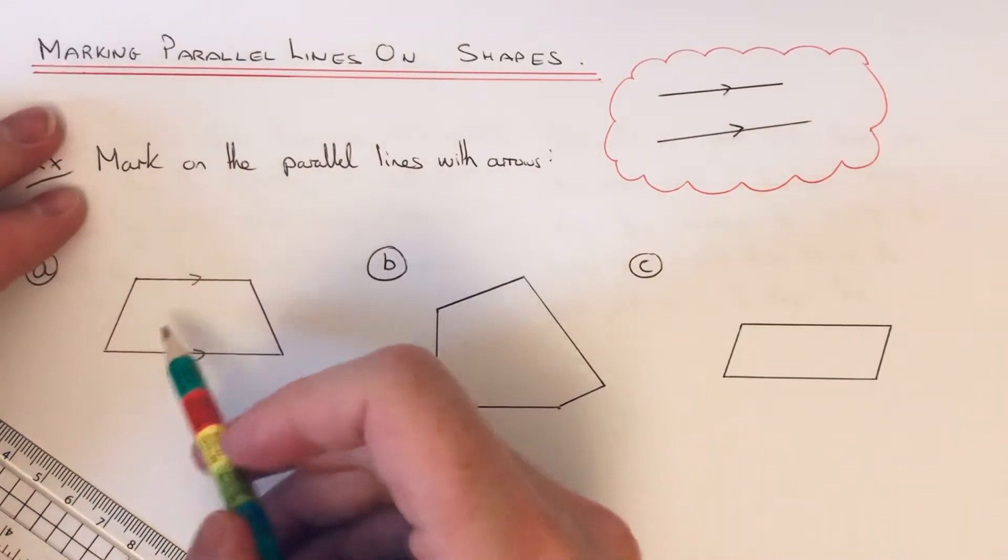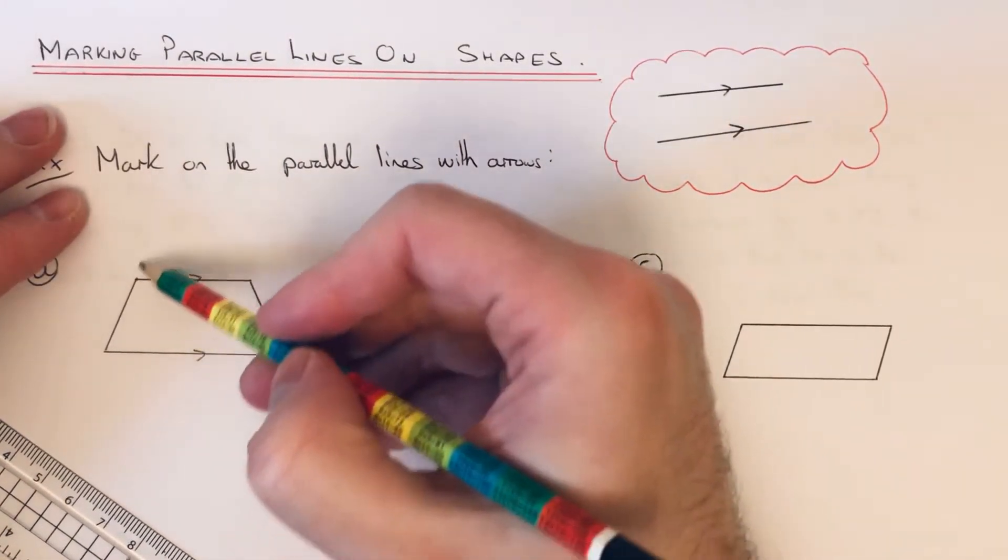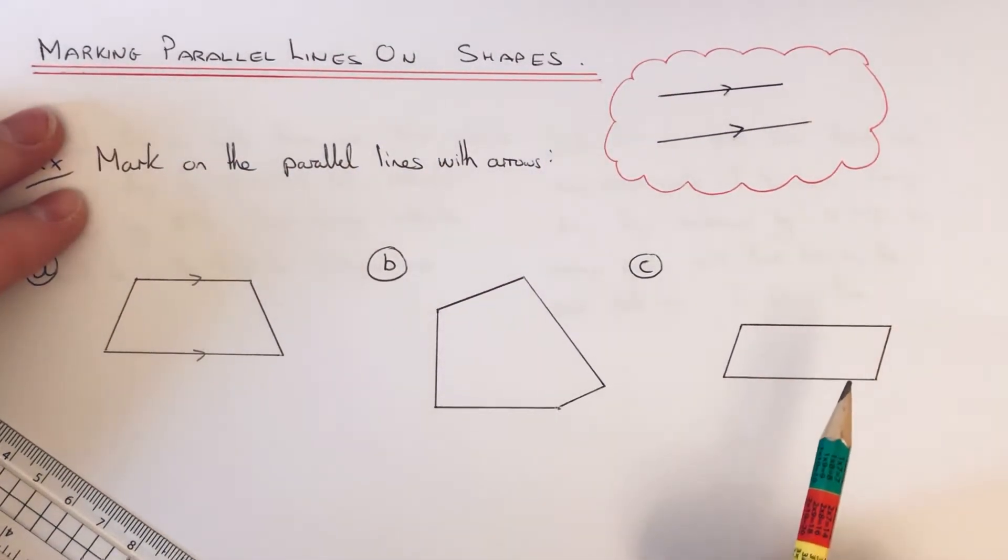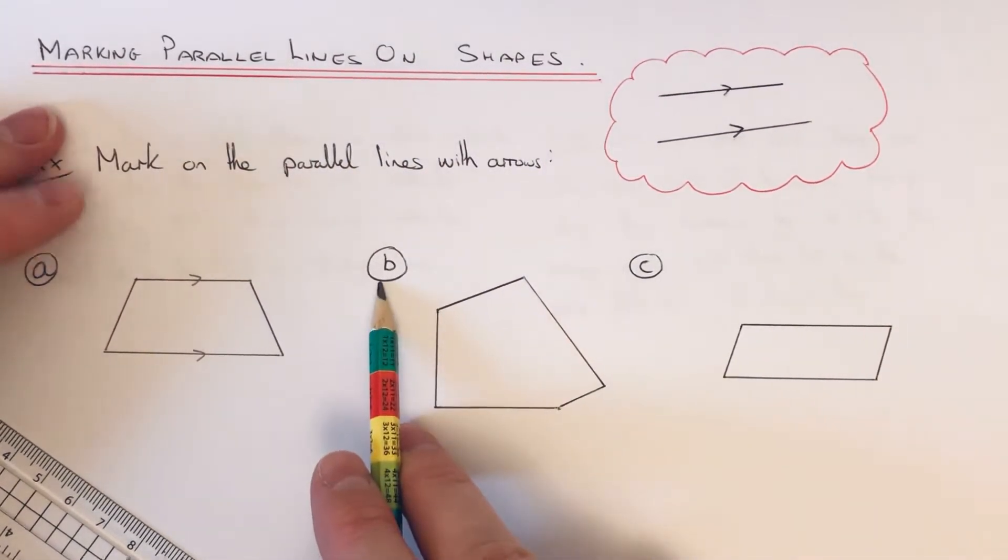Don't make the mistake of labeling these two, because if you extend these two lines you'll find that they will cross over. Okay, so let's have a look at part B.